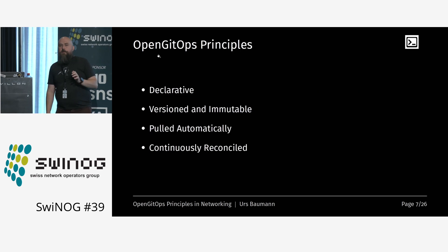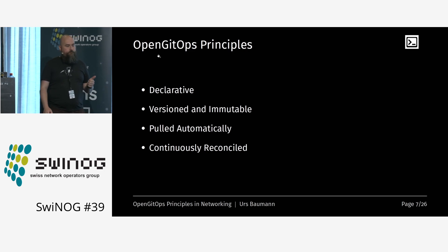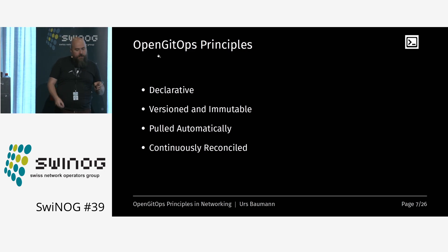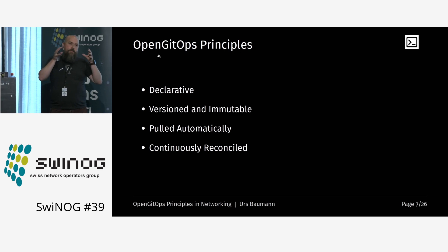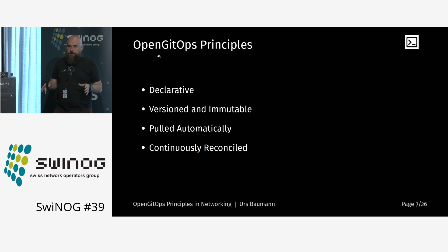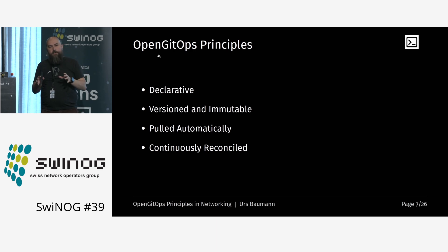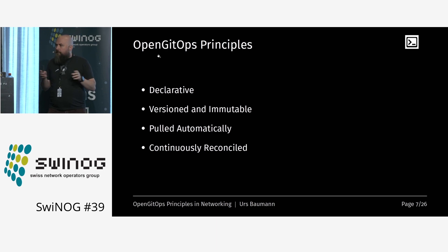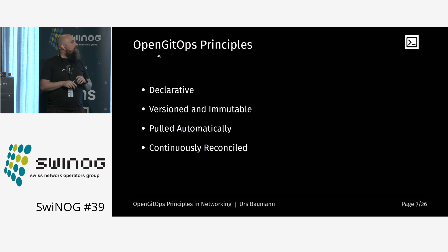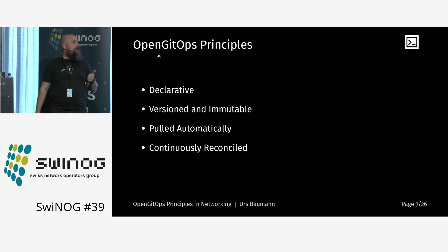The four principles are really simple. First, it has to be declarative — the idea is to decouple the implementation and just have the declarative abstract definition of our infrastructure. It does not mean we have to automate everything at once. We can start small — let's say we only configure access-facing interfaces. That's totally fine, but it needs to be done in a declarative way, and it needs to be versioned and immutable.